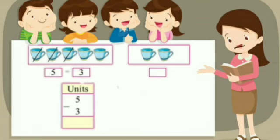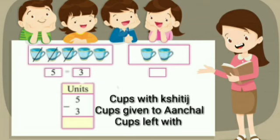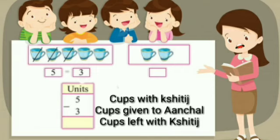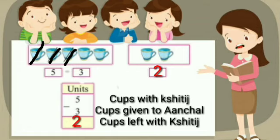Now, how many cups does Khritra have left? Cups with Khritra minus cups given to Achel equals cups left with Khritra. Khritra had 5 cups, gave 3 to Achel. So, Khritra's cups: 5 minus 3 is equal to 2.